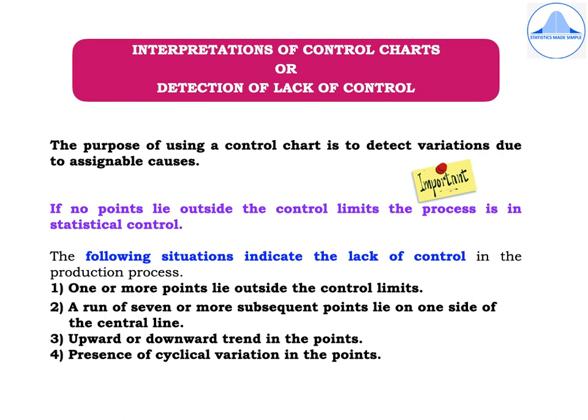The following situations indicate lack of control in the production process: one or two points lying outside the control limits, a run of seven or more subsequent points lying on one side of the central line, an upward or downward trend in the points, or the presence of cyclical variation in the points.